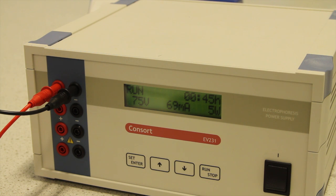The display will change to run and the voltage will increase to the level set. The display will also begin to count down from the time set. The gel is now left to run to allow the DNA samples to migrate through the gel, separating according to their size.